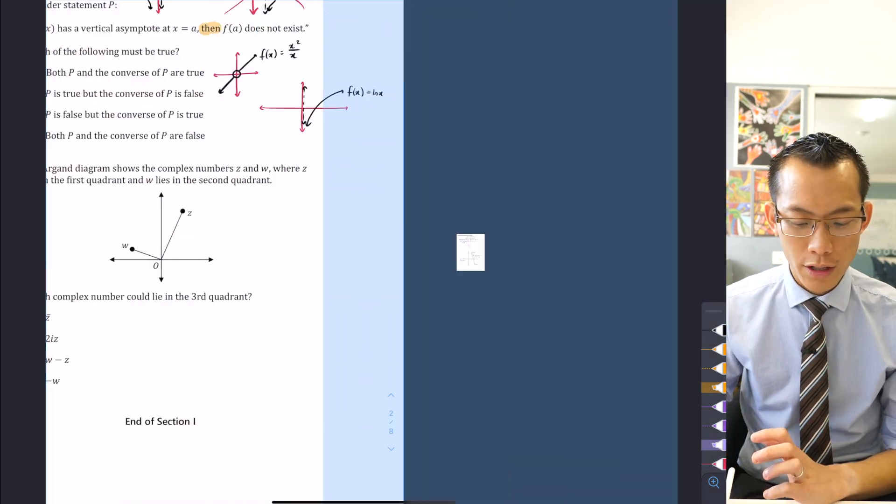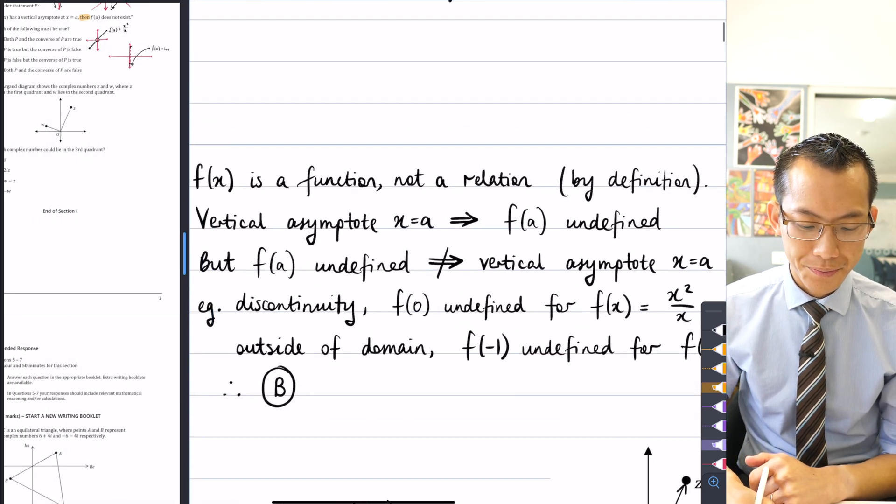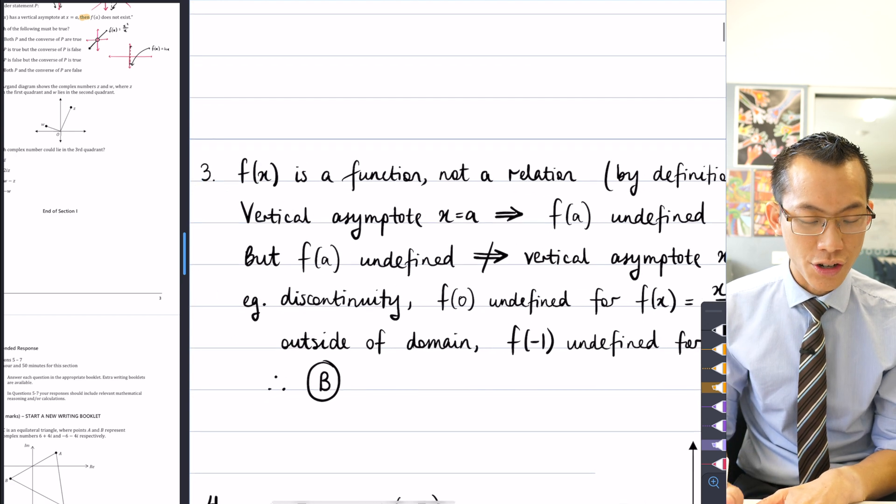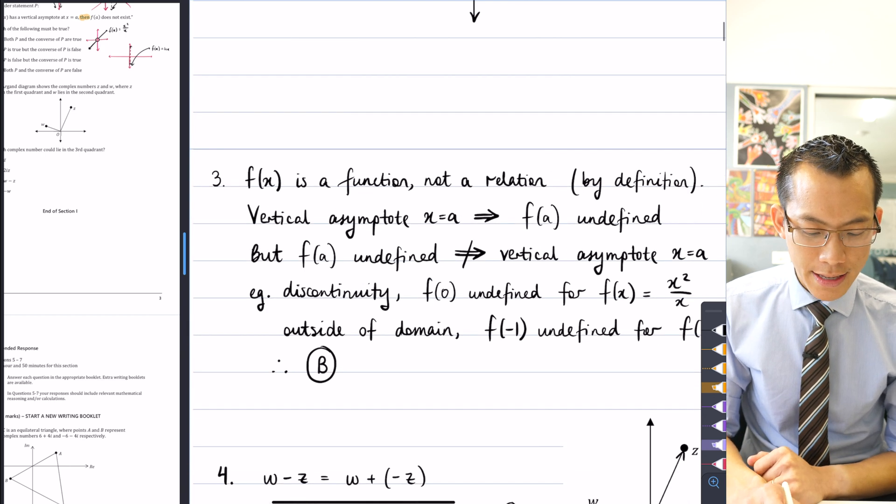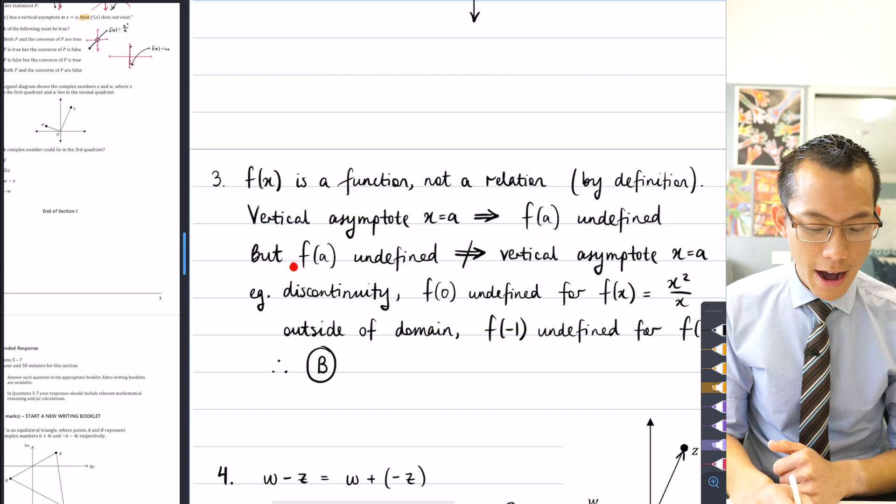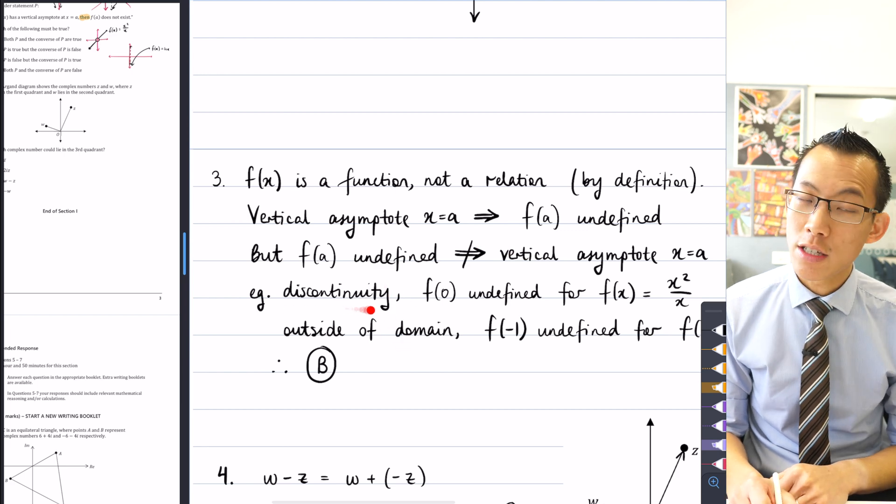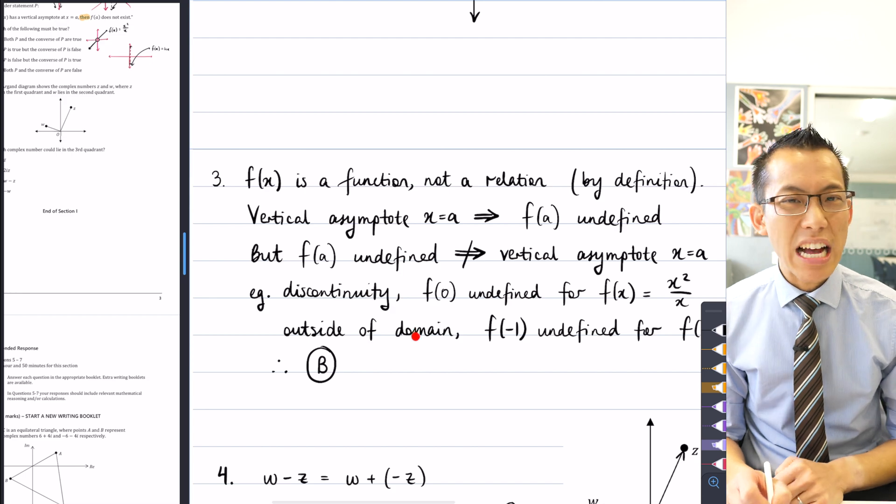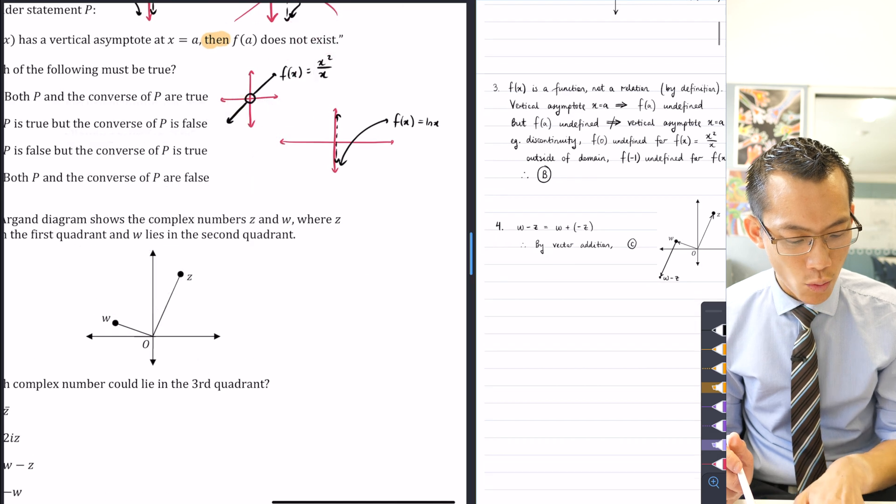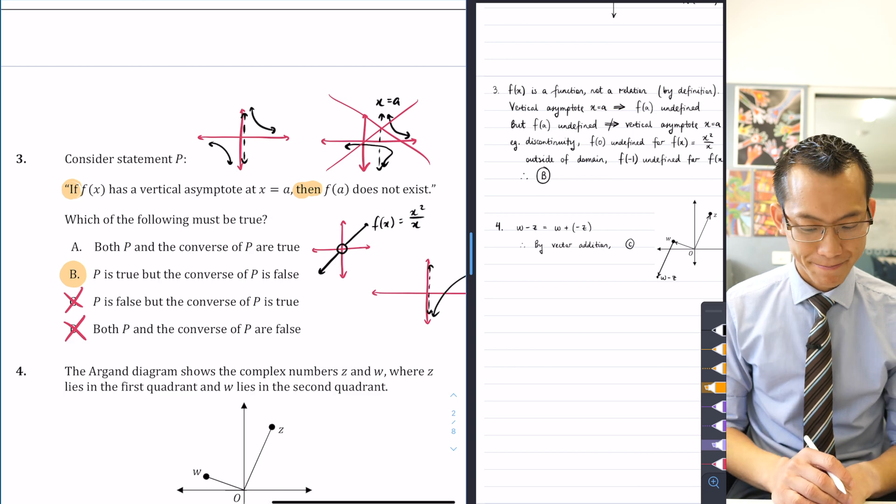So this is the way that I, not that working was required for this because it was a multiple choice question, but this is the way that I reasoned it. I've got, let me just come back here, f(x) is a function, not a relation, and that's part of the definition of function notation. And I said vertical asymptote at x equals a does imply that f(a) is undefined, so that's statement P. But when I have a look at the converse, that's not true. And here are the examples that I gave. Discontinuity, like that little hole punched out, or when you're just outside the domain. As I said, log x is my example there. So that gives us the reason why B is the correct answer over here.